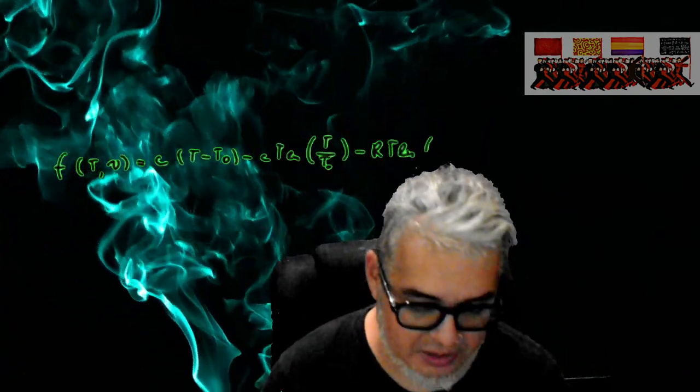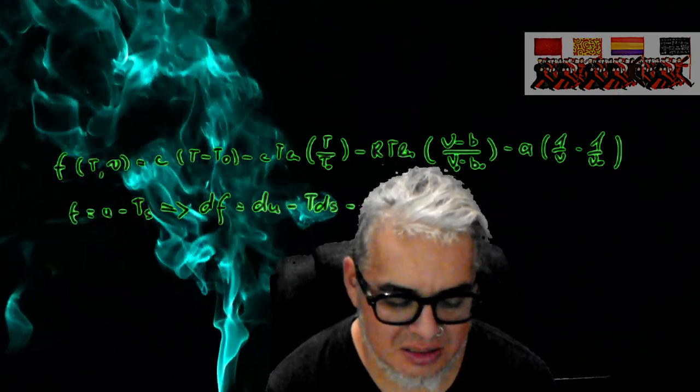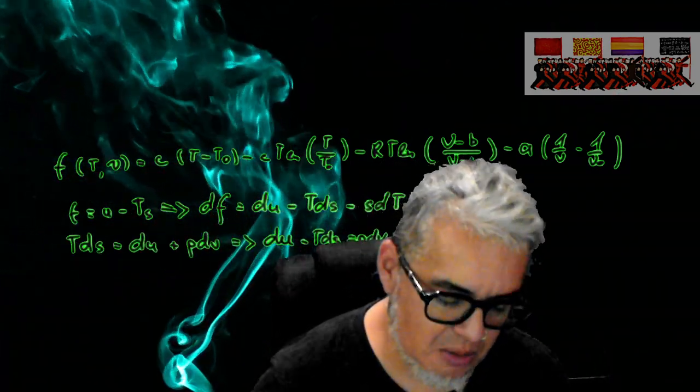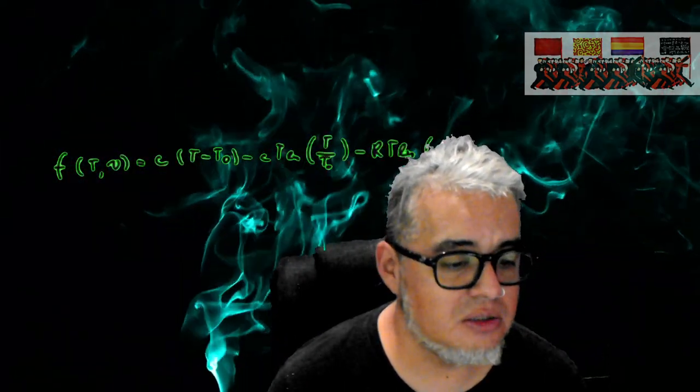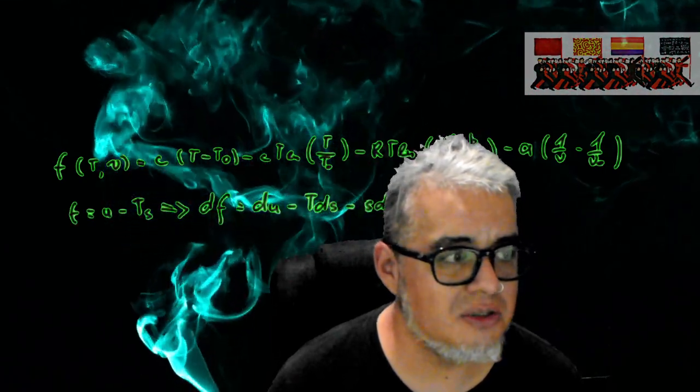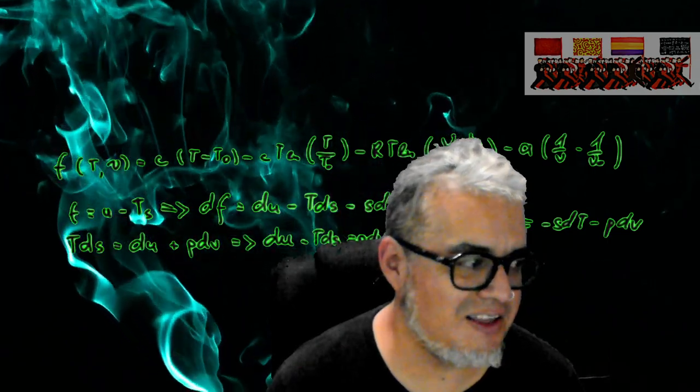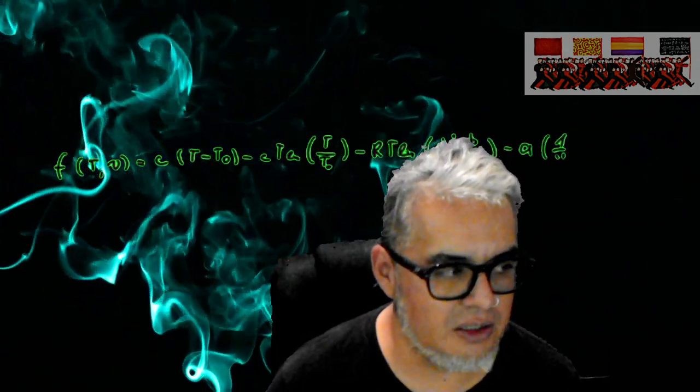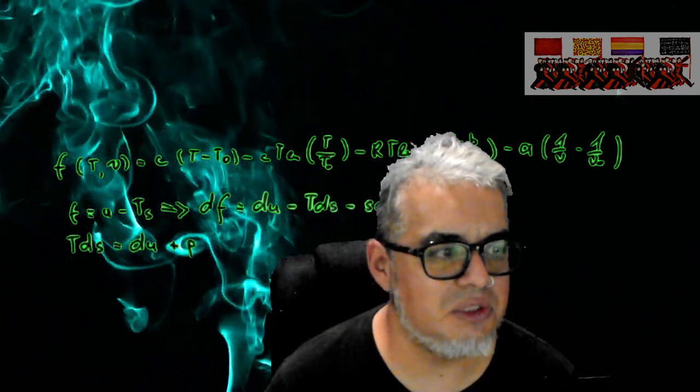Pero esa va a ser como nuestra primera prueba de conceptos, si quieren podemos llamarle así. Entonces pues vamos un rato al pizarrón a garabatear. Vamos a hacer un par de ejemplos de lo último que estuvimos viendo, que son los problemas de control asociados a estrategias de control óptimo en modelos compartimentales.